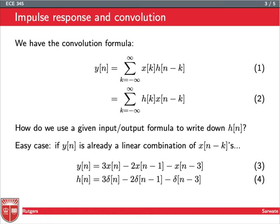So what are we actually looking for? It's pretty easy if y[n] is already a linear combination of delayed versions of x. If it's already a linear combination of delayed versions of x, then you can take a formula like y[n] equals 3x[n] minus 2x[n-1] minus x[n-3], and you can just replace x with delta, with the impulse function.